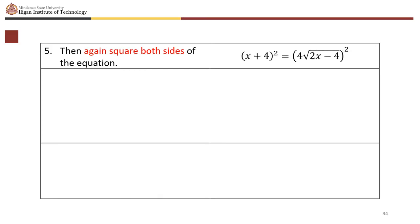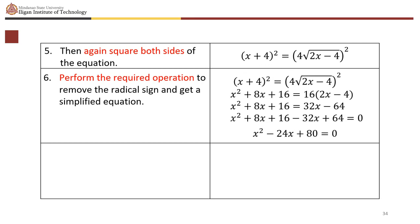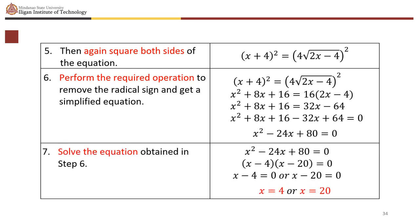Square both sides again: (x plus 4)² equals (4 times square root of (2x minus 4))², giving x squared plus 8x plus 16 equals 16 times (2x minus 4). Simplifying: x squared plus 8x plus 16 equals 32x minus 64, so x squared minus 24x plus 80 equals 0. Factoring: (x minus 4)(x minus 20) equals 0, giving x equals 4 or x equals 20.